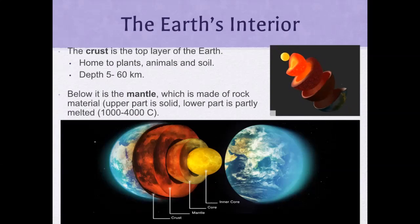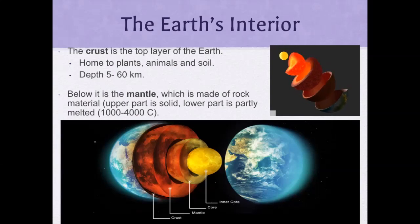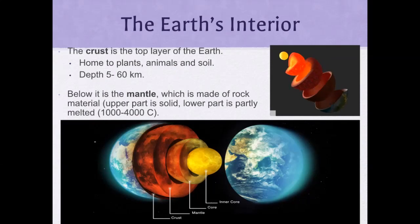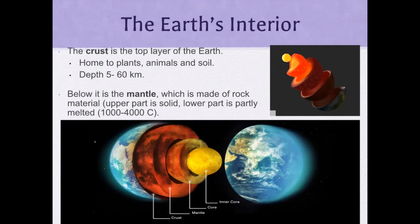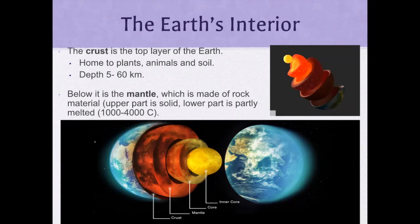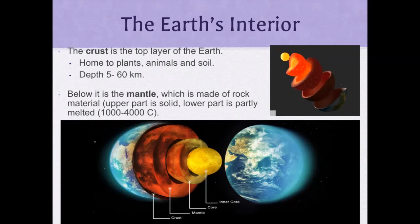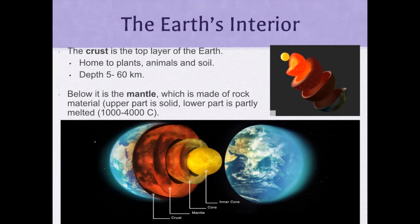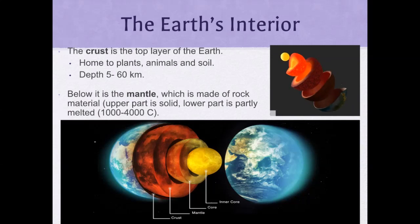The interesting thing about the crust is: if the Earth were a basketball, the crust would be about the thickness of a piece of paper. In actuality, the stuff we stand on every day is relatively thin compared to the liquid part at the centre of the Earth, which is very, very hot.